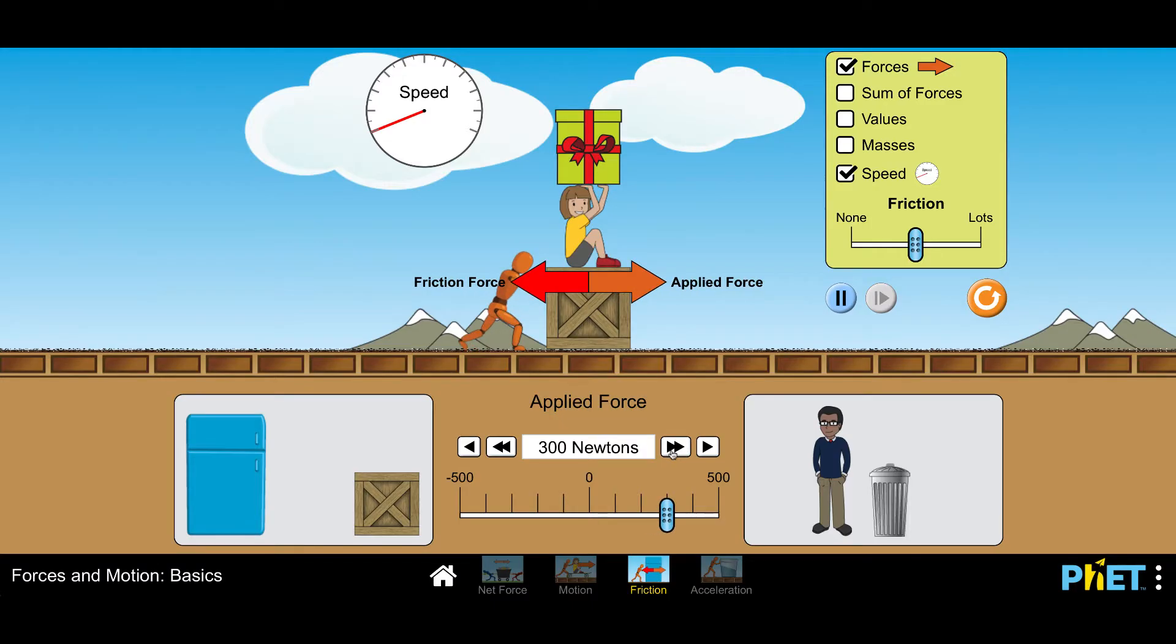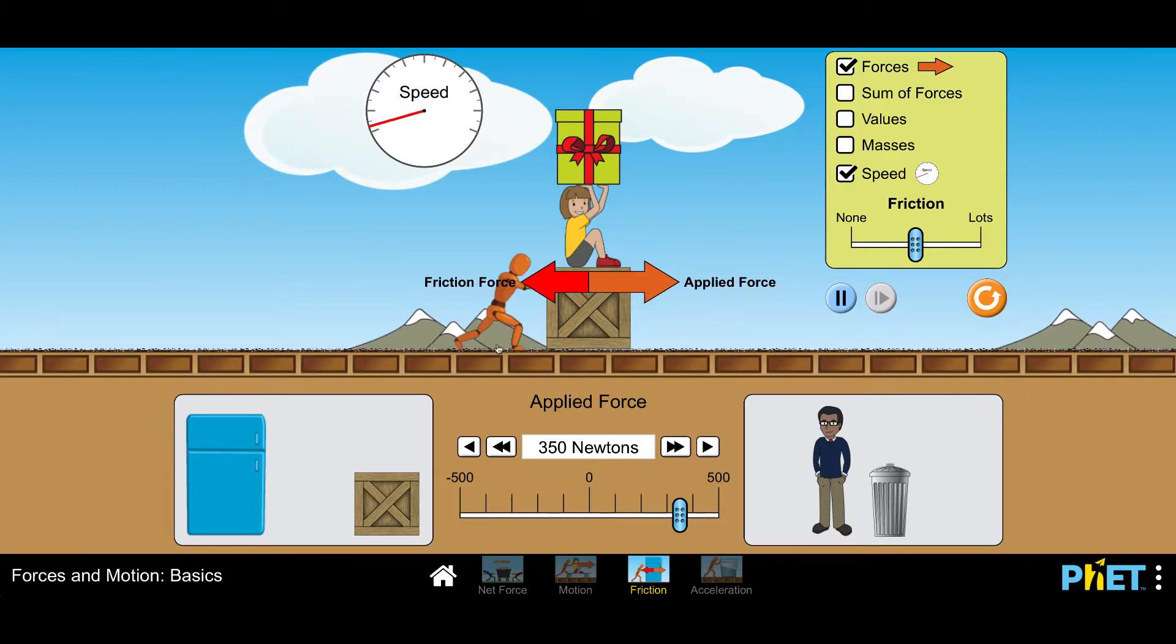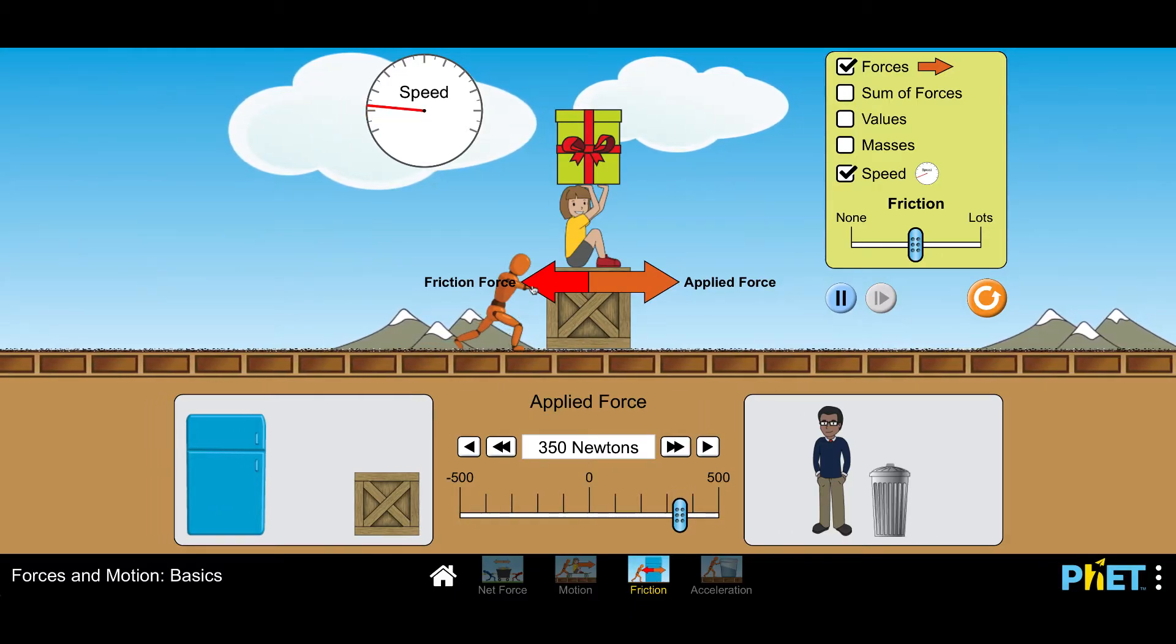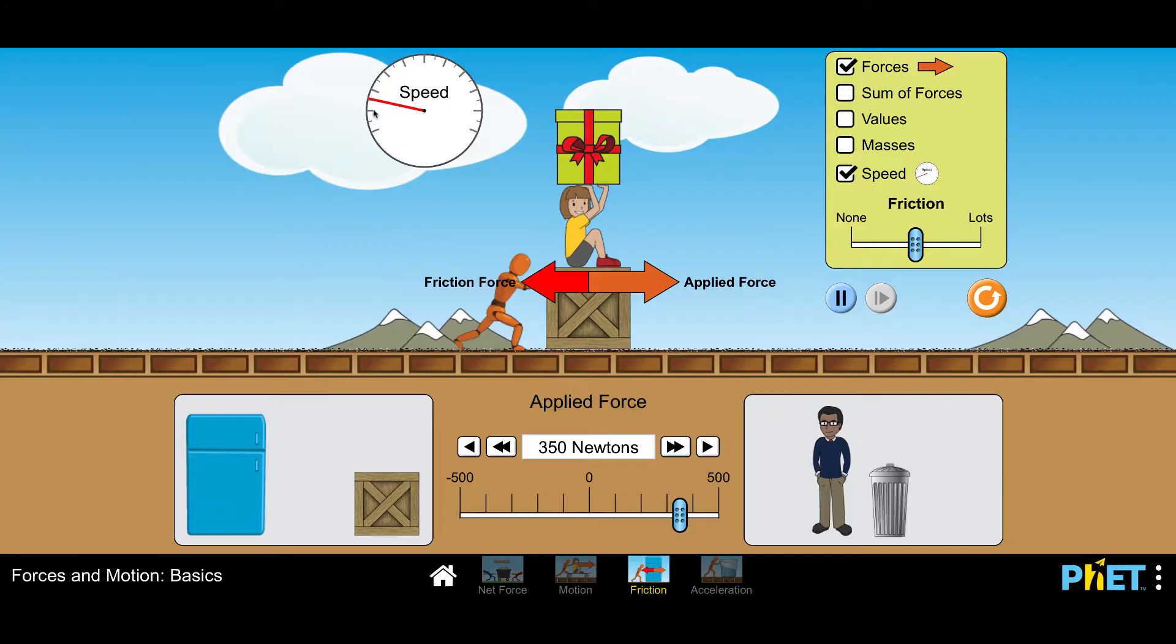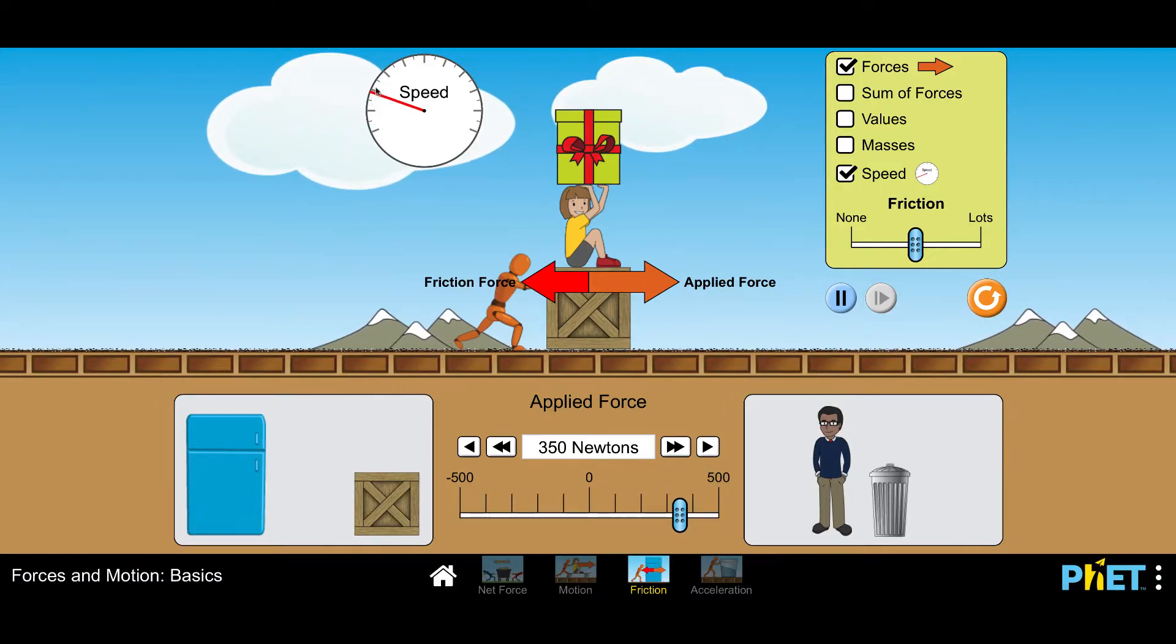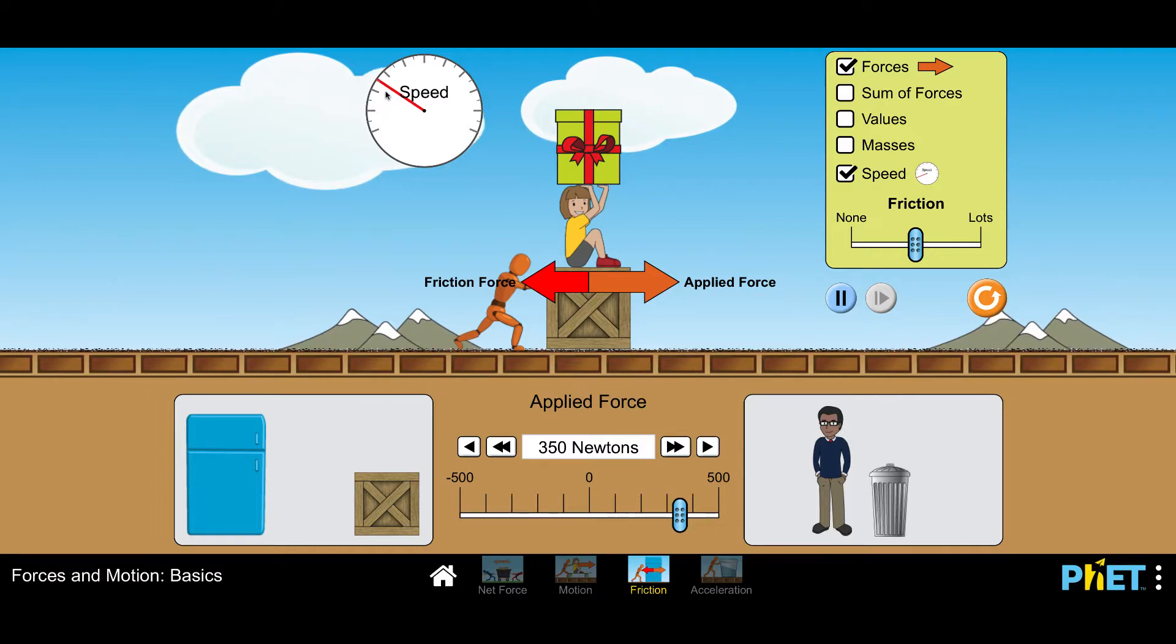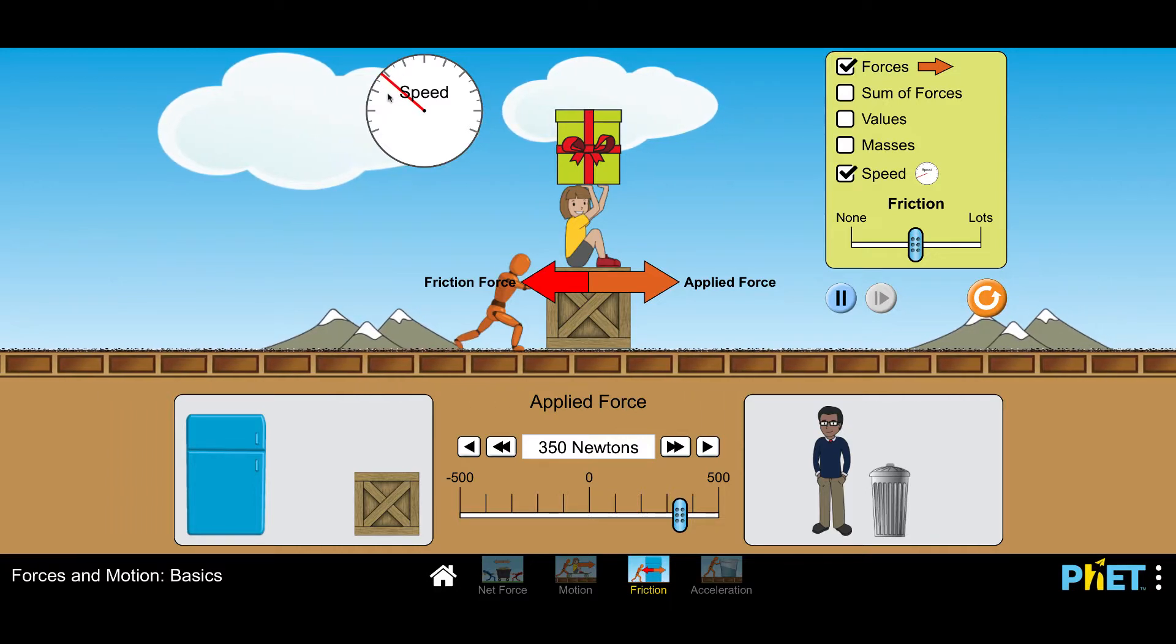250, 3, 350, and there he starts to go. So our applied force, our pushing force is unbalanced now. It has overcome the friction force. And we can see our speedometer. Our heavy object is moving. So we have acceleration here. Amazing.